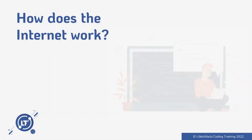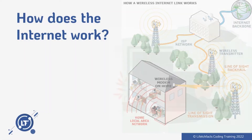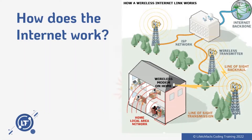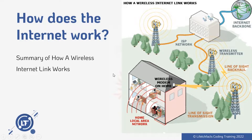Now, how does the internet really work? I have an image here that simplifies everything. This is a summary of how a wireless internet link works. First, you see the internet backbone — it passes information across to your ISP network. The ISP network always stays connected to the internet backbone.